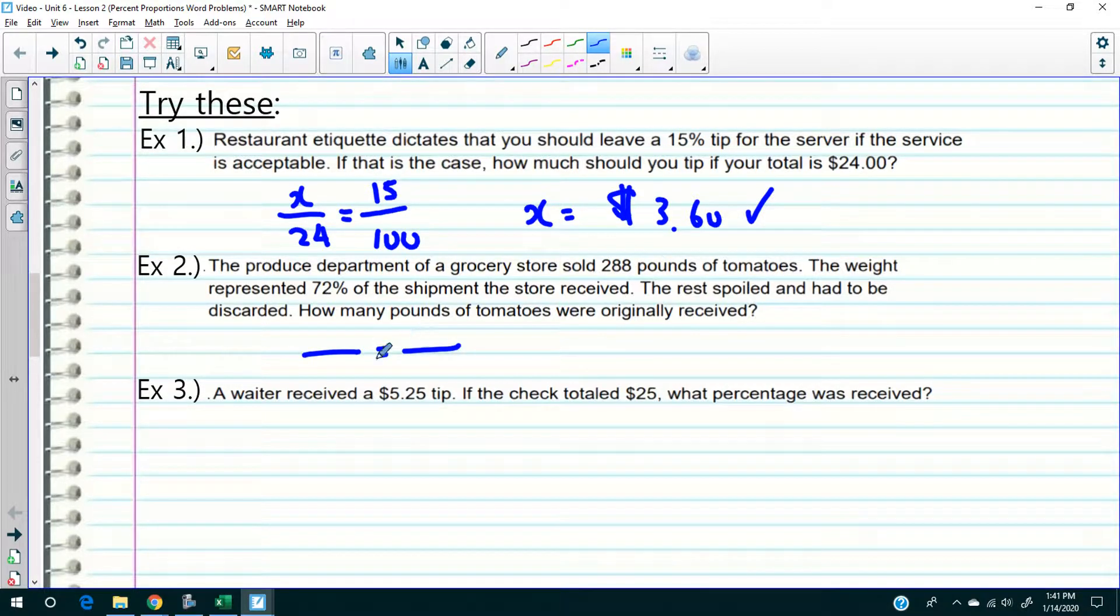The produce department sold 288. They sold 288, that's not how many originally received. So I got to read the question carefully. So 288 out of what is 72%? Let me repeat that: 288 out of what is 72%? So that's a type C question. 288 times a hundred divided by 72 is 400. So 400 potatoes were originally received.